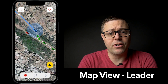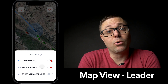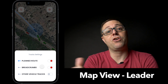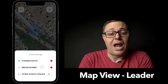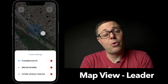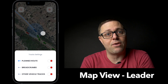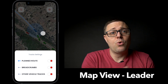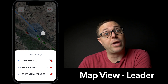Up in the top left, you get options to see different routes. You have the planned route, which the leader uploads ahead of time. Then breadcrumbs — where you've been as an individual truck. And other vehicle tracks — the tracks of all vehicles around you, helpful if there's a detour or the leader needs to move off the planned route, so you can see where all the trucks went. As a leader, you can also see all tracks and last known locations.